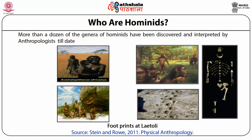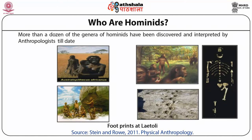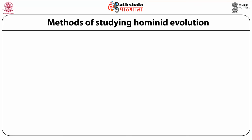Yet there remains a great deal of uncertainty. However, anatomical and molecular data indicate that the gorilla, chimpanzee, and bonobos are more closely related to humans than the orangutan. Thus, 'hominid' is a blanket term which encompasses a larger array of primates with several phylogenetic diversities.